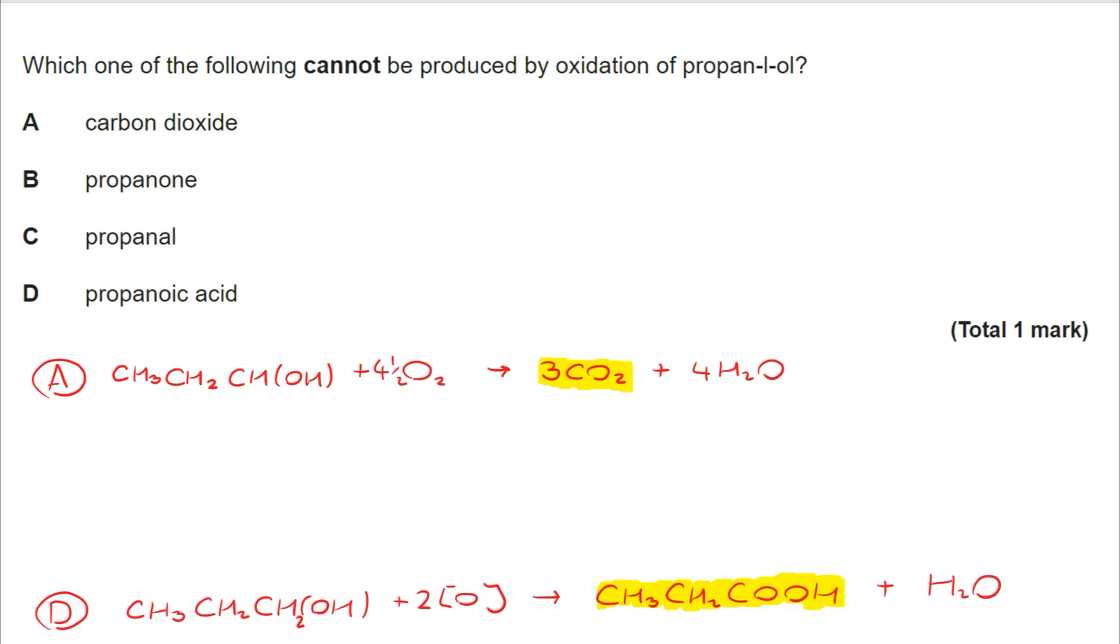For D, going from a primary alcohol, I can go to a carboxylic acid. I've got the equation here. The O in square brackets is the oxidizing agent, acidified potassium dichromate-6. The condition here is reflux. But if we didn't do this under reflux, we would make propanal. That leaves us with the correct answer, which is B-propanone. A ketone is made by the oxidation of a secondary alcohol. For that reason, we cannot produce it from propan-1-ol.